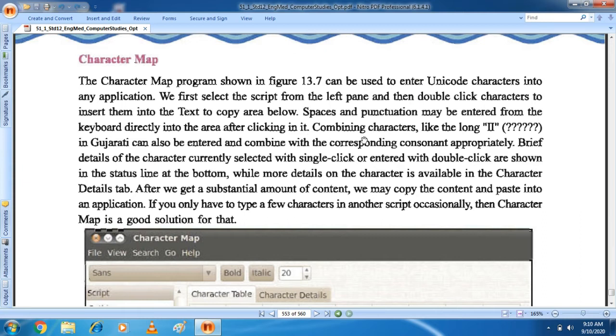But combining characters like the long vowels in Gujarati can also be entered and combined with the corresponding consonant appropriately. Brief detail of the character currently selected with the single click or entered with double click are shown in the status line at the bottom. More detail on the character is available in the character detail tab. After we get substantial amount of content, we may copy the content and paste into an application.